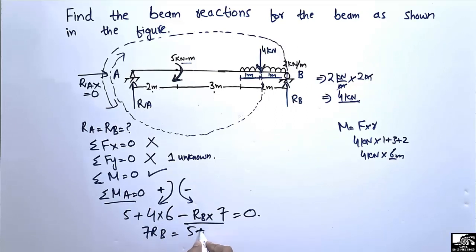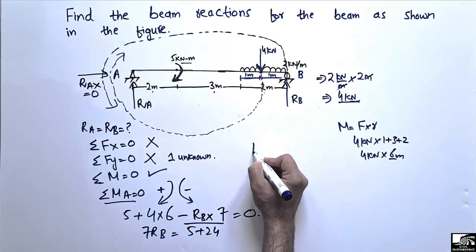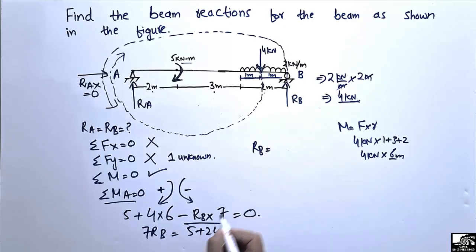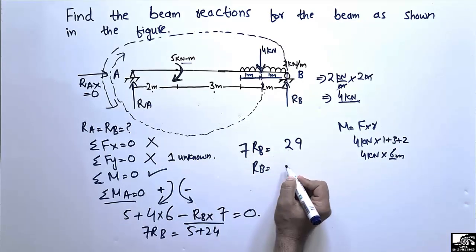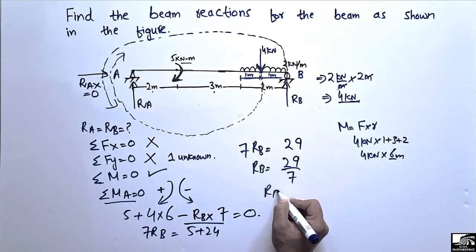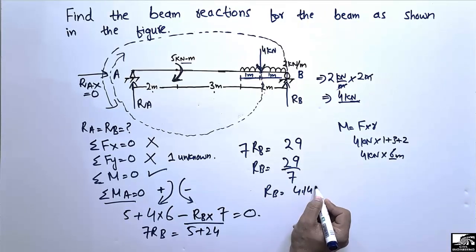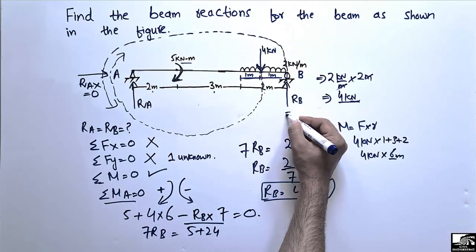Shifting RB to the right side: 7RB = 5 + 24 = 29. Dividing both sides by 7, we get RB = 29 ÷ 7, which gives RB = 4.14 kilonewtons.